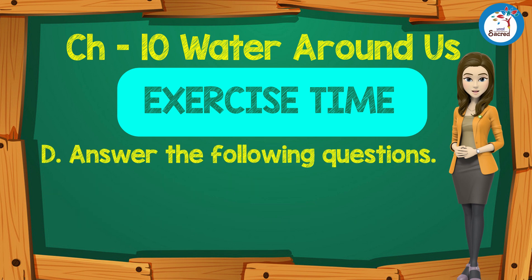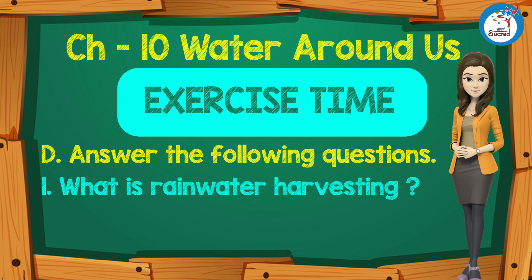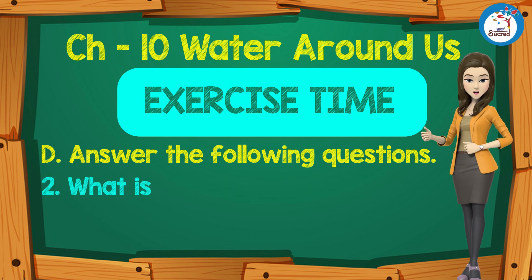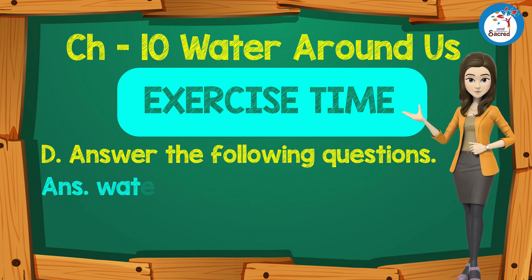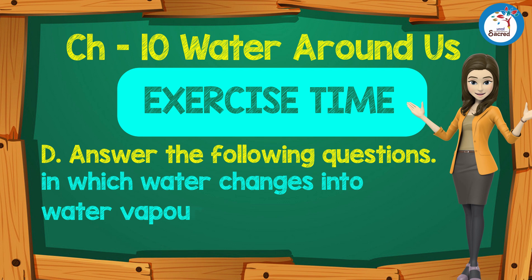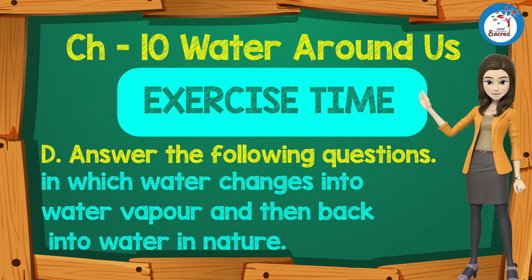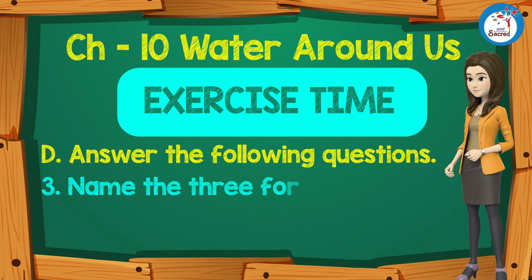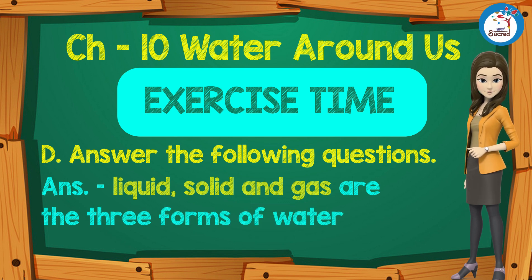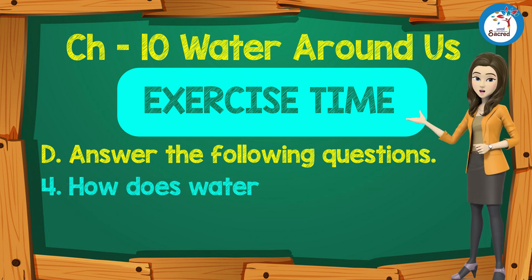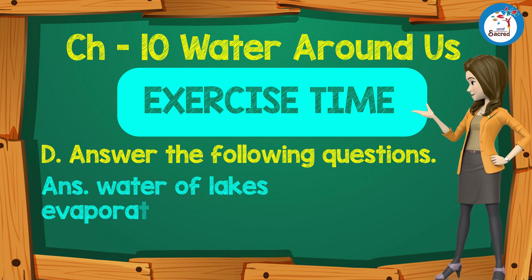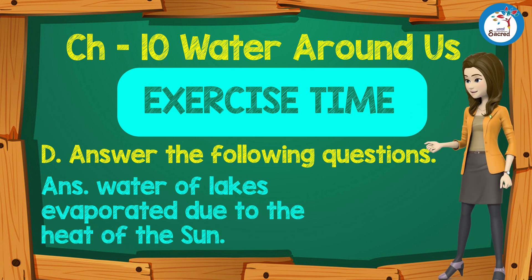Answer the following questions. First: What is rainwater harvesting? Answer: Rainwater harvesting is a way to save water. Second: What is the water cycle? Answer: The water cycle is a continuous natural process in which water changes into water vapor and then back into water in nature. Third: Name the three forms of water. Answer: liquid, solid, and gaseous. Fourth: How does water from ponds and lakes evaporate? Answer: Water from ponds and lakes gets evaporated due to the heat of the sun.